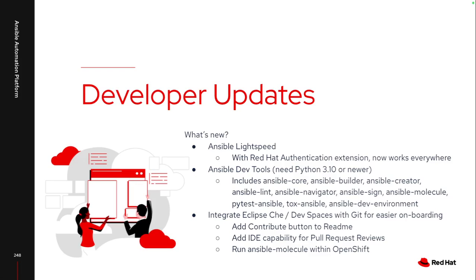If you are looking into OpenShift Dev Spaces or Eclipse, and you want to ease that onboarding process, there are new capabilities to add a contribute button to a readme with a direct link to Dev Spaces and to that exact project. I can tie this to a specific branch — if I always want personnel to operate off the development branch, I can tie that directly into my process. I can also tie into my pull request process to add a web IDE link so I can review code inside OpenShift Dev Spaces and do additional testing.